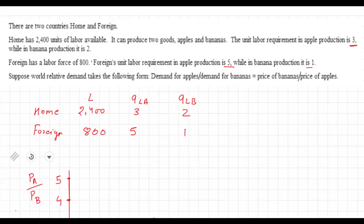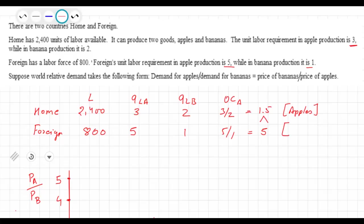Before we go on, let's find out the opportunity cost in the two countries of producing apples. It's 3/2 for the home country and 5/1 for the foreign country. So the opportunity cost of producing apples is smaller in the home country, and the foreign country has a comparative advantage in producing bananas.